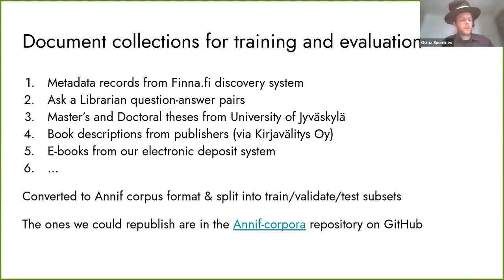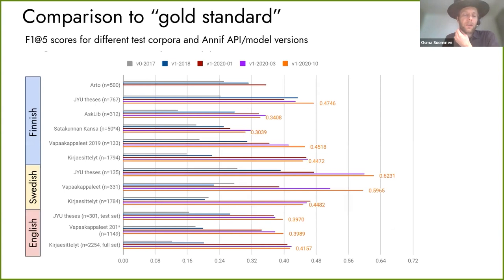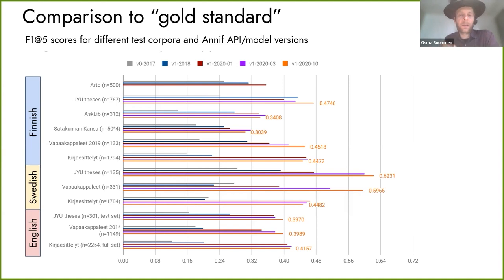To find out how well different algorithms work in practice, we collected pre-existing manually indexed documents from various databases and turned them into corpora in a standard structured format. The same corpora were used for training. We were careful not to test algorithms on documents used for training — standard practice in machine learning. We could then compare subjects suggested by algorithms to those assigned by manual indexers. This diagram shows how well different generations of our algorithms have performed on the same corpora, and the most recent scores shown in orange are usually the best ones.